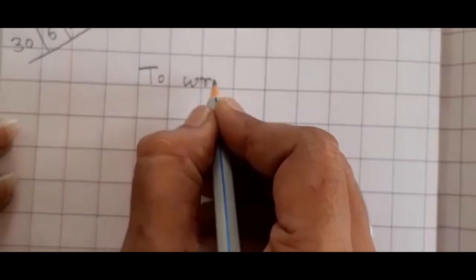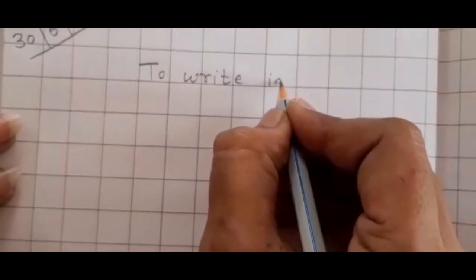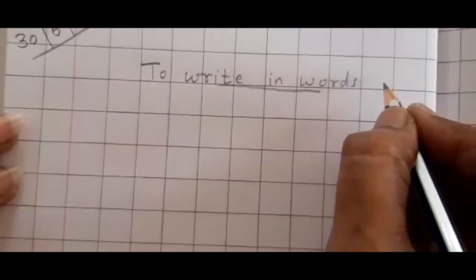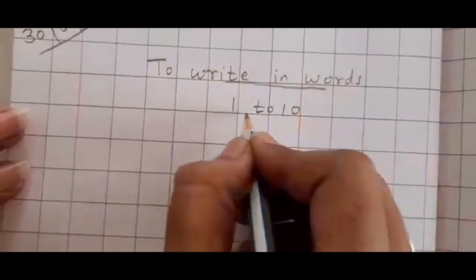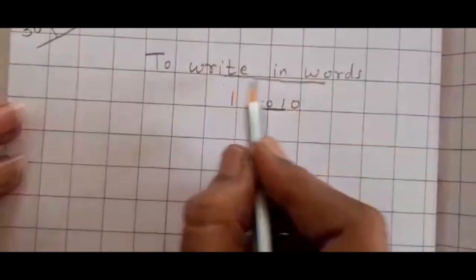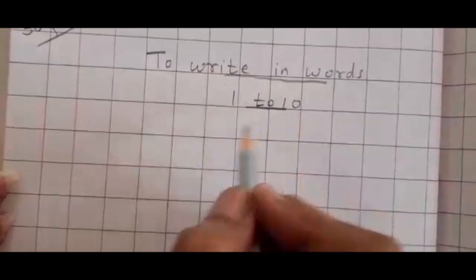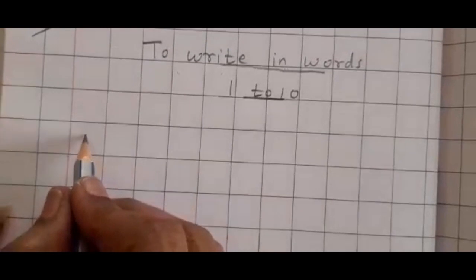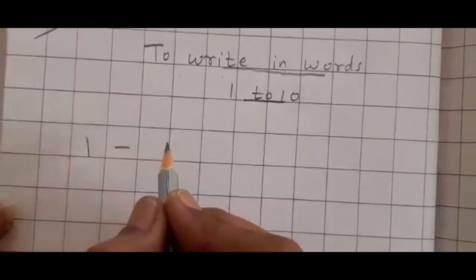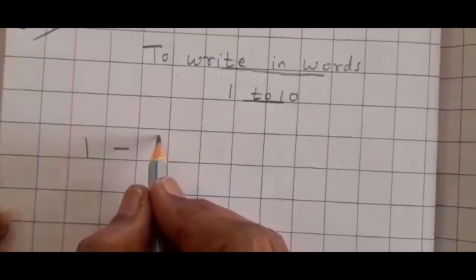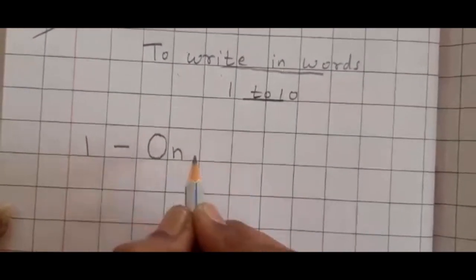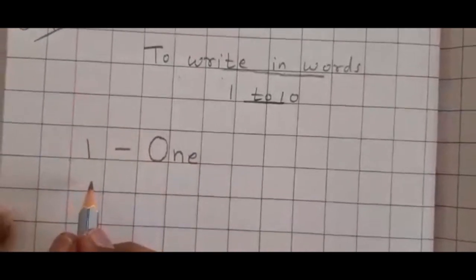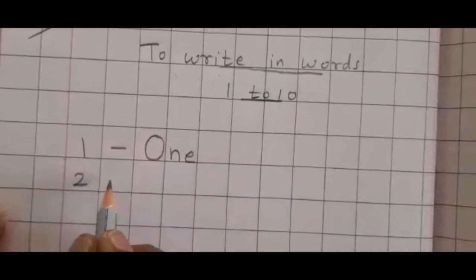Now you have to start to write numbers in words — 1 to 10 in words. Beside this pink line you have to start from the very pink line. Write your number 1, put a dash, starting with a capital letter O and E — ONE. Then what comes after 1? 2.